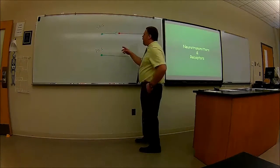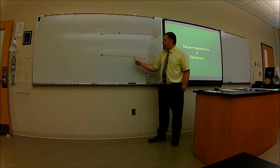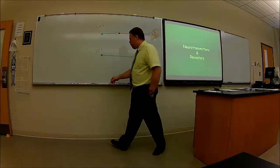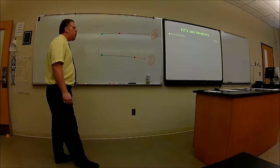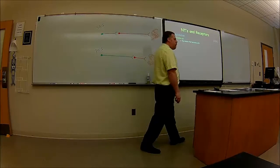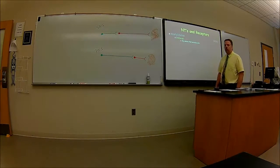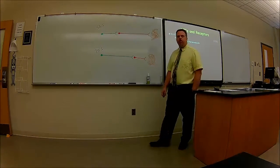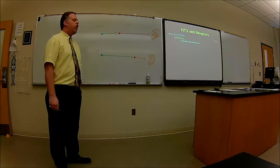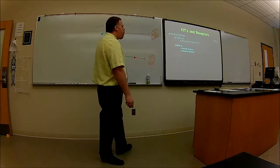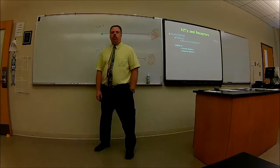What we're going to talk about are the neurotransmitters and receptors at various synaptic locations. Acetylcholine — any neuron that secretes acetylcholine is known as a cholinergic neuron. Simple as that. We've seen that with the neuromuscular junction — those neurons are cholinergic neurons.